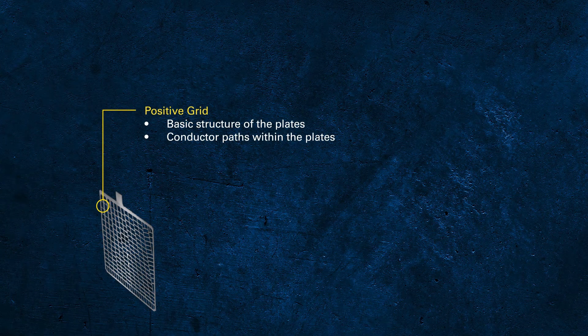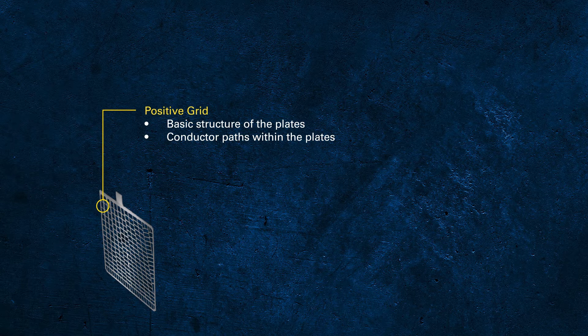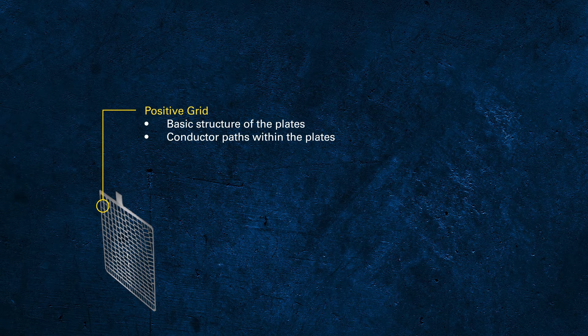First, we're going to have a look at the positive plate, or if you'd like to be more scientific, the positive electrode. The plate is basically a grid with the active mass attached to it. The grid itself has two different functions. It provides a basic structure that supports and holds the active mass.